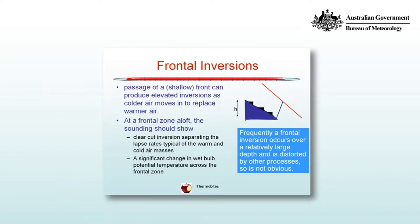At a frontal zone aloft, the sounding should show a clear-cut inversion separating the lapse rates typical of the warm air mass and the cold air mass behind the front. There should also be a significant change in the wet bulb potential temperature across the frontal zone, and that tells us that there are two very different air masses, not just in terms of temperature but also moisture.